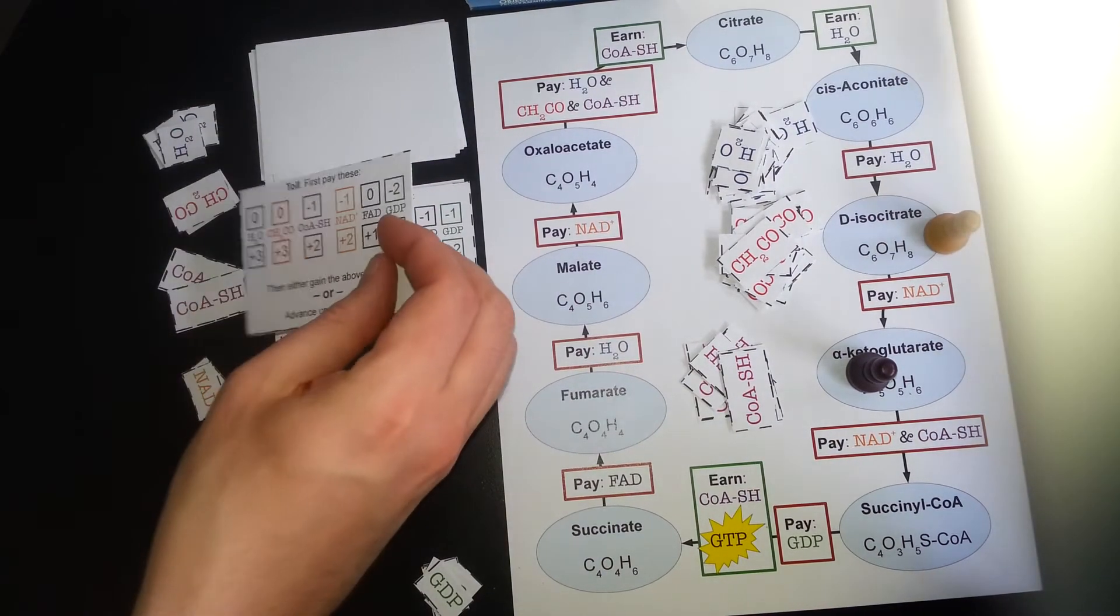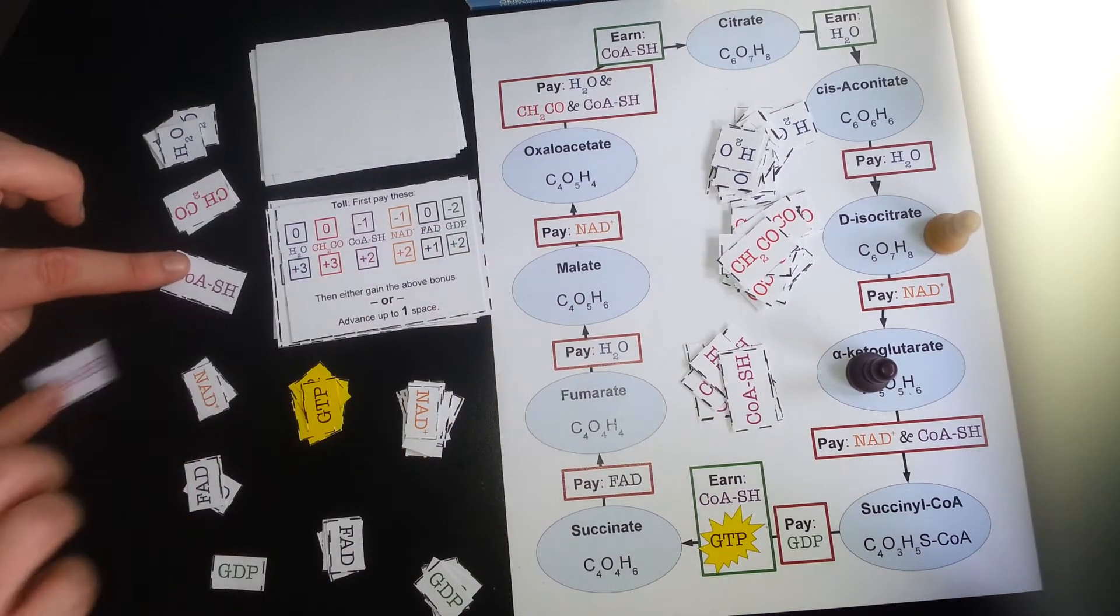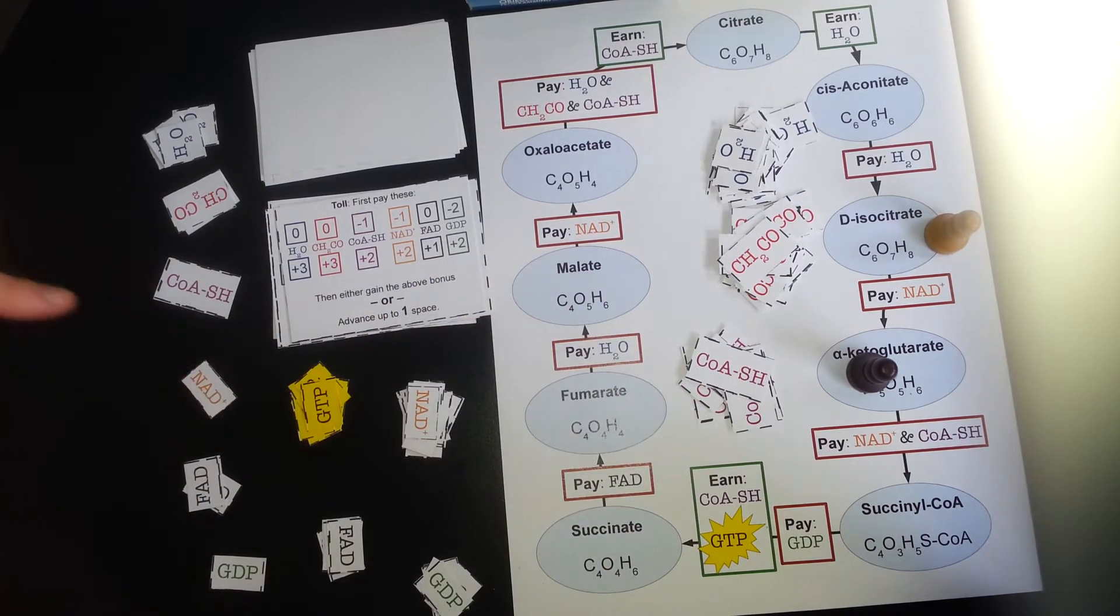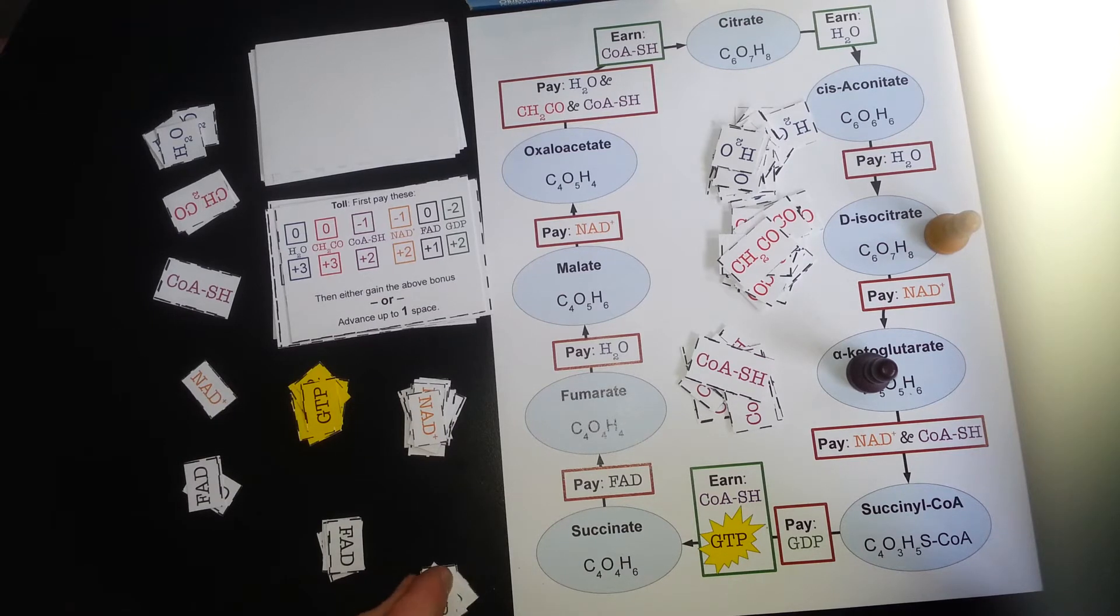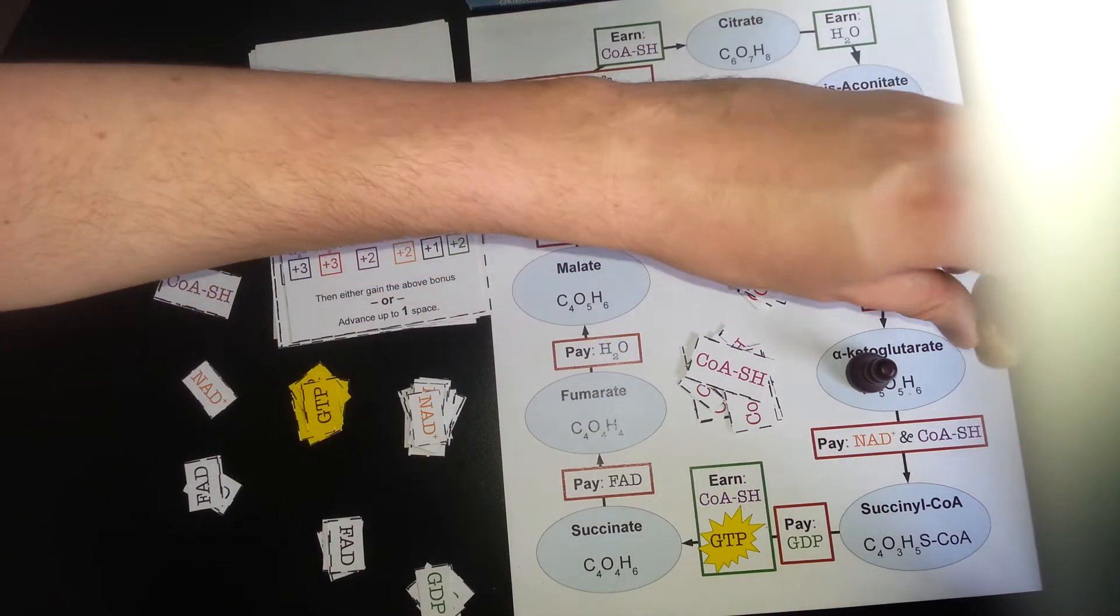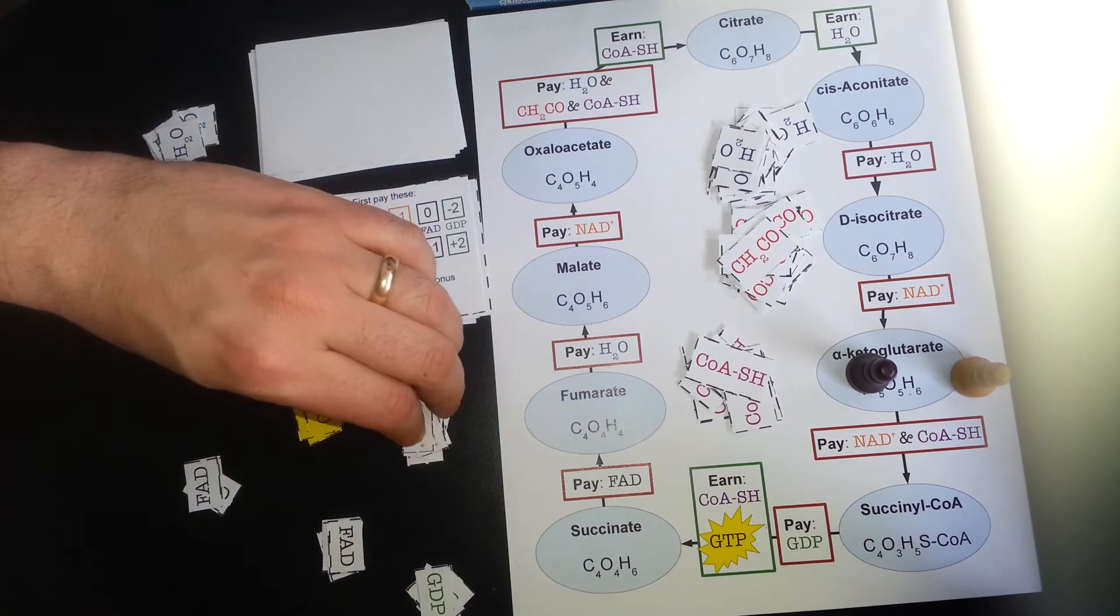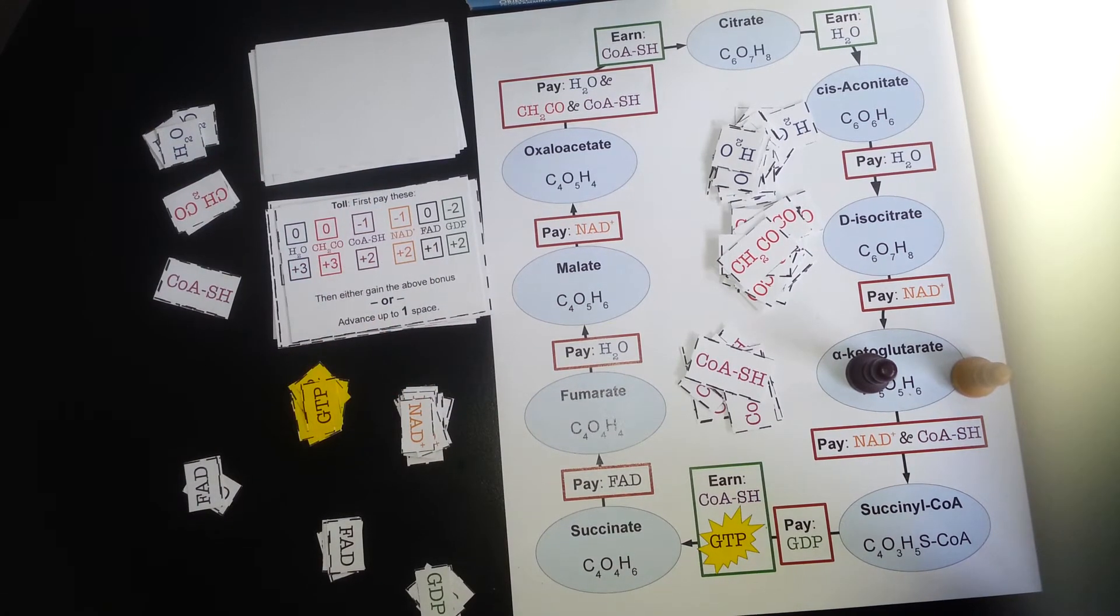Alright, my turn. Let's see. Flip over a card. So first I pay the toll. I lose my CoASH. I lose my NAD+, and I lose two GDPs while I only have the one. When I look at this, I see, oh, I can advance. I can get up with Ernie. So I'm going to do that. I'm going to advance the one space. I pay my only NAD+, and now I'm tied with Ernie. Alright, Ernie, it is your turn.